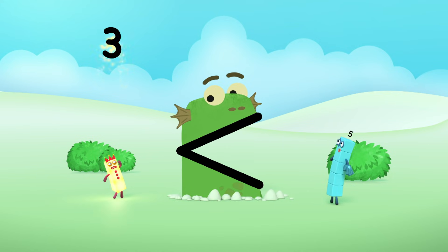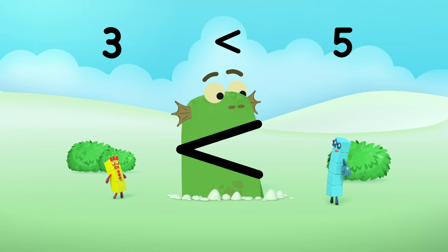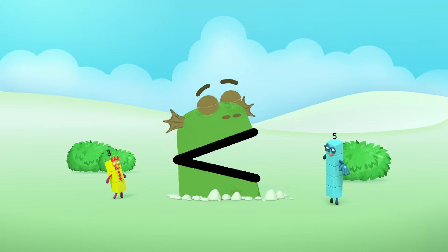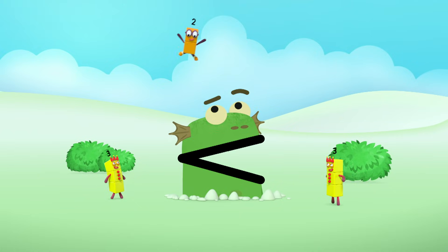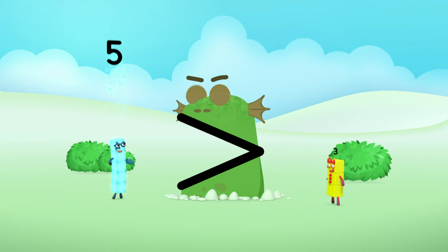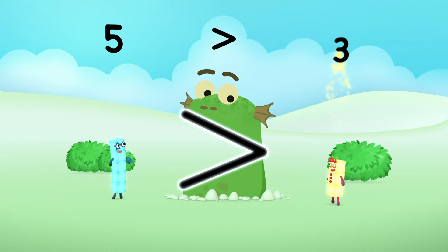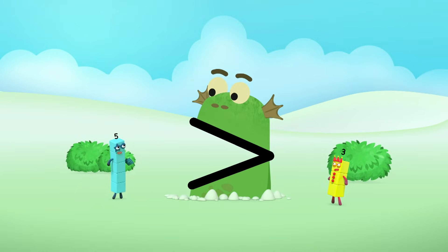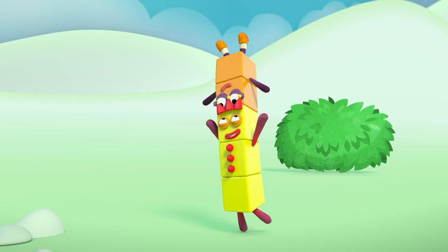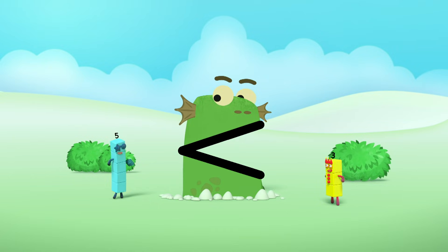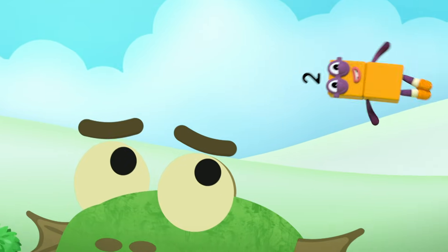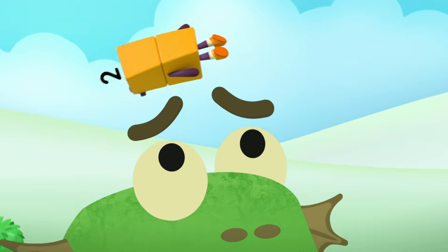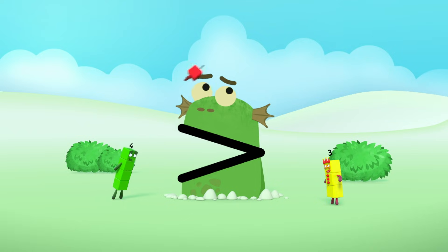Three is less than five. Me like five. Me mean five is greater than three. Me like five. Three is less. Five is greater. Three, five, one.